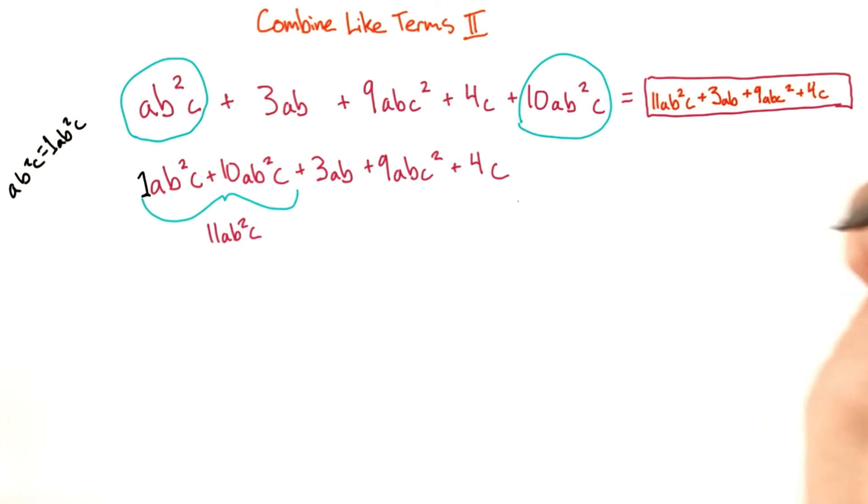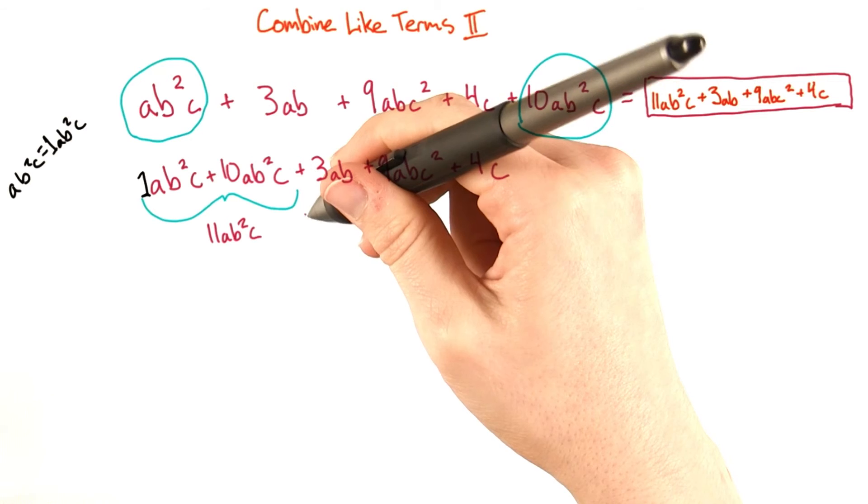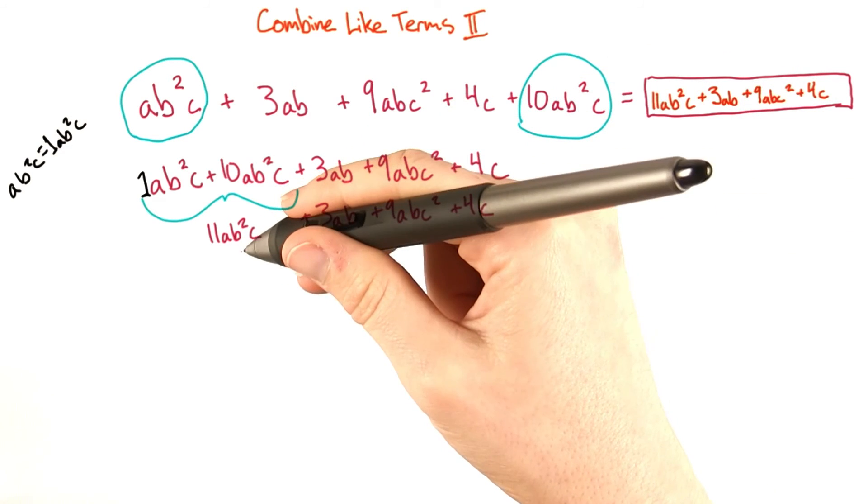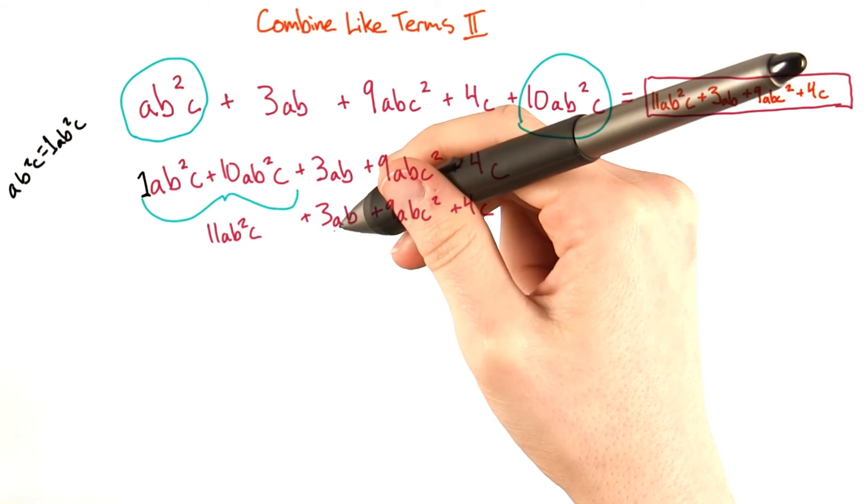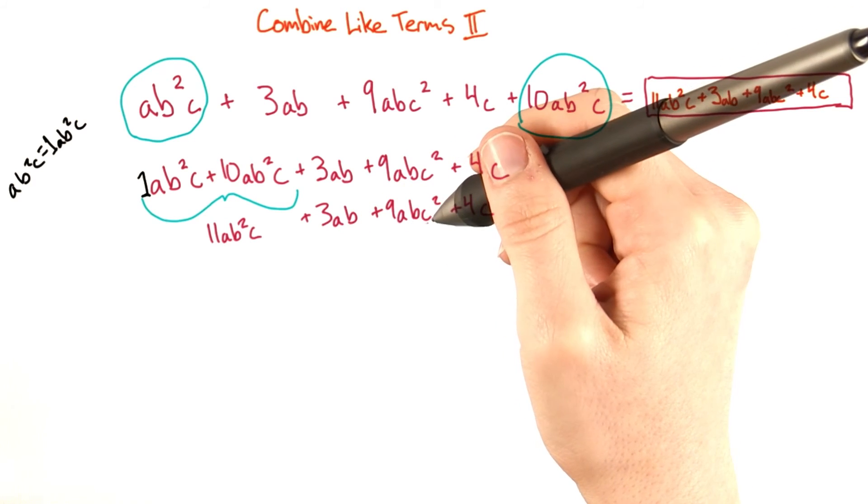We can't combine any coefficients for these other terms, so they just stay how they are. And our final answer is 11ab squared c plus 3ab plus 9abc squared plus 4c.